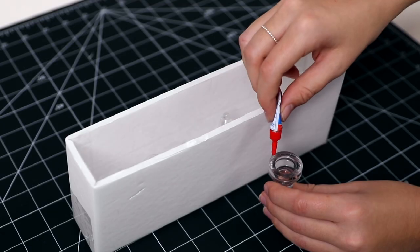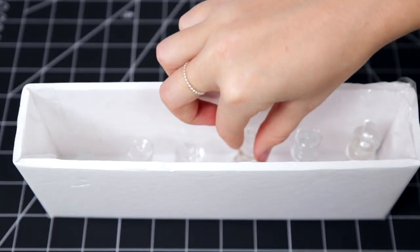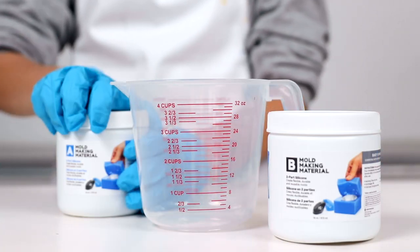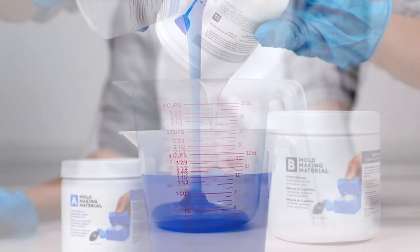Coat the bottom of your pieces with glue and place them evenly within your box to hold them firmly in place. Now it's time for the mold making material. You'll want to measure equal amounts of part A and part B.